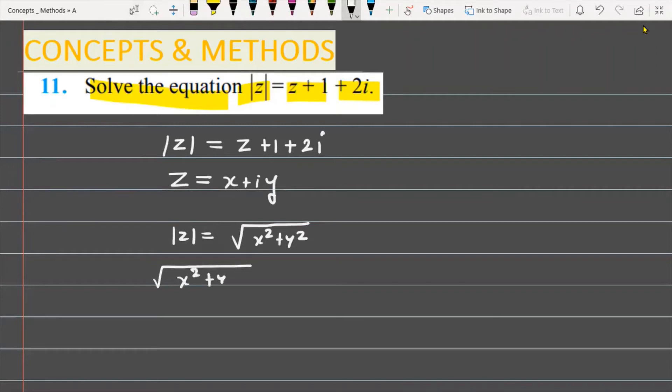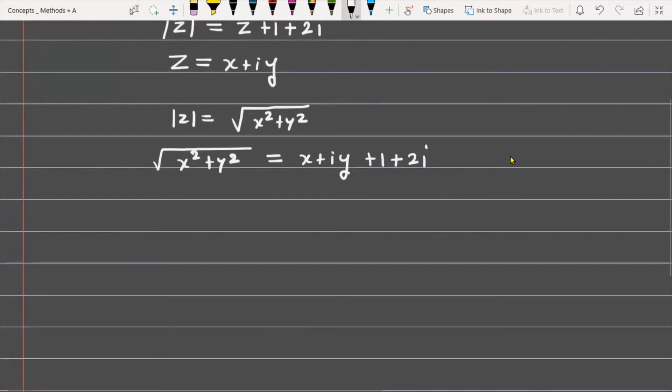On the right side, you can write it as x + iy + 1 + 2i. In the next step, we can write it as √(x² + y²) = (x + 1) + i(y + 2).